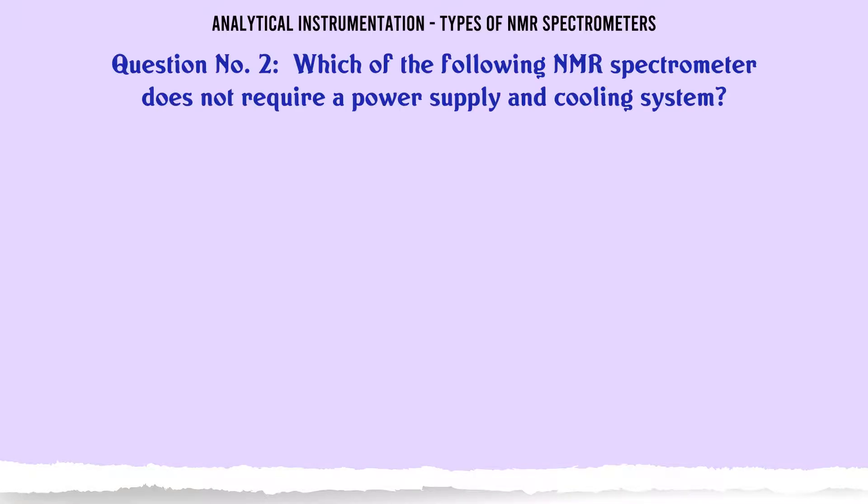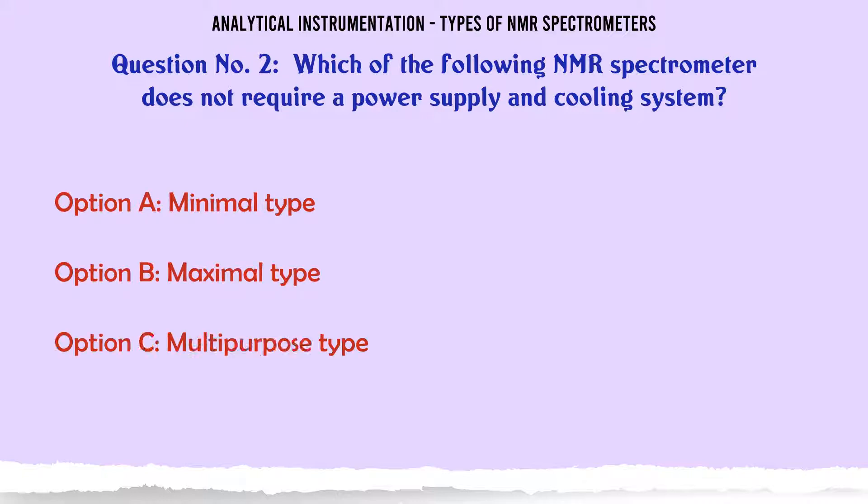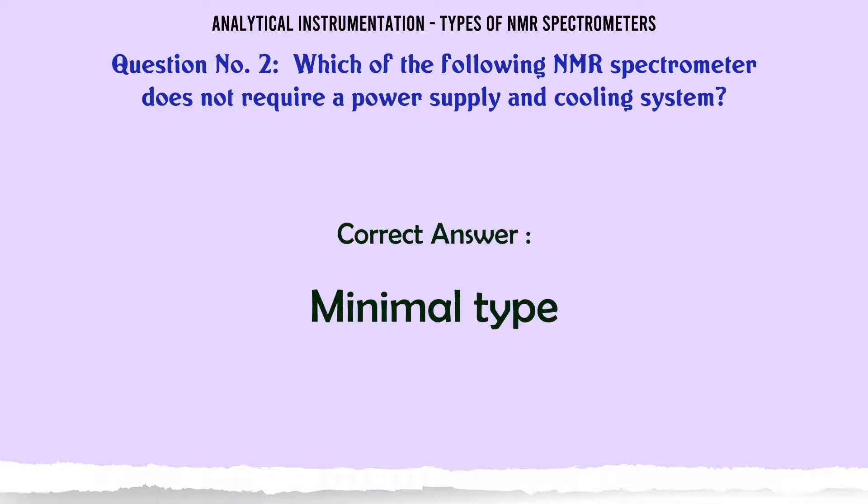Which of the following NMR spectrometer does not require a power supply and cooling system? A. Minimal type. B. Maximal type. C. Multipurpose type. D. Wide line type. The correct answer is Minimal type.